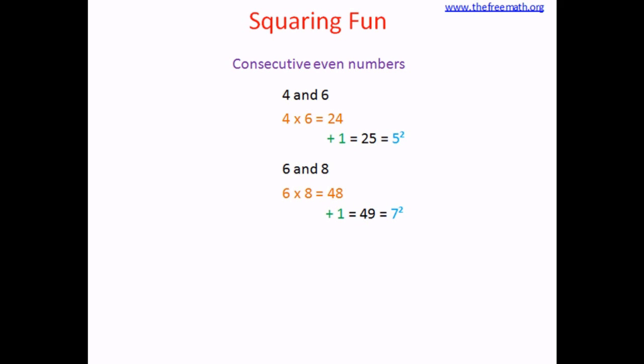Now does this work for odd numbers as well? Let's check that out. Let's consider two consecutive odd numbers, start with an easy pair 5 and 7. So 7 times 5 is 35. Now you add 1 so you get 36 which is the square of 6.